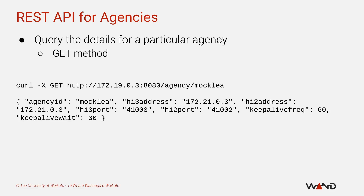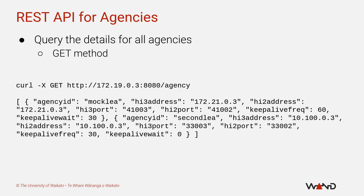Querying for the details of a specific agency works in exactly the same way, except you send a GET request rather than a DELETE request. The response returned by the REST service will be a JSON object describing the properties of the agency — the same JSON object that we sent when we added the agency previously. You can also use the GET request to get details for all configured agencies simply by not including a specific agencyId in the URL. The response will be a list of JSON objects, each describing a particular agency.